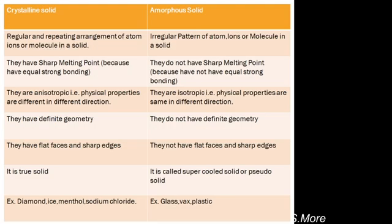Crystalline solids may be anisotropic — physical properties are different in different directions. But amorphous solids are isotropic — physical properties are the same in different directions. Crystalline solids have definite geometry, but amorphous solids do not have definite geometry.